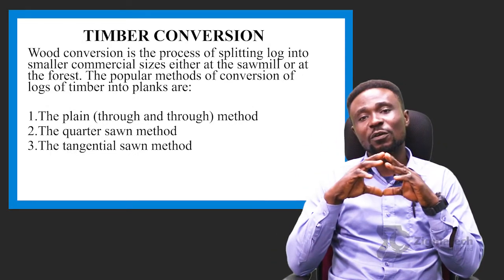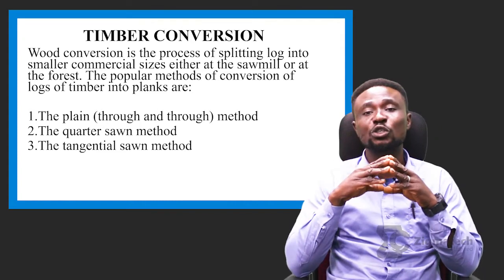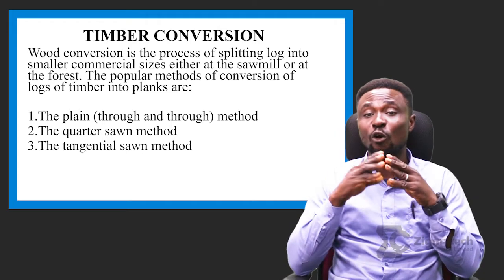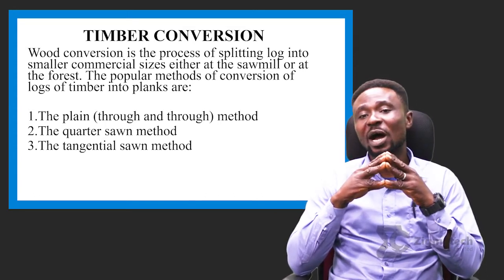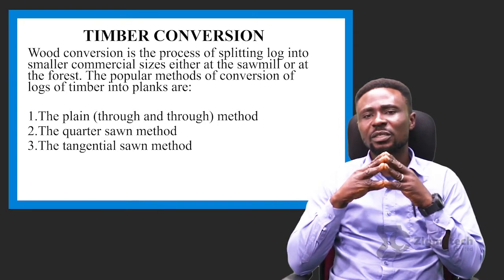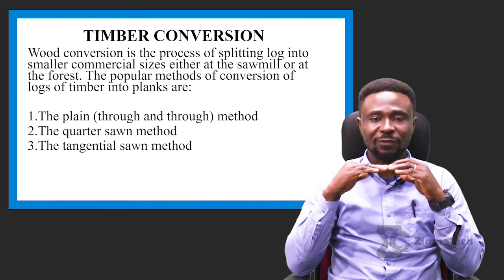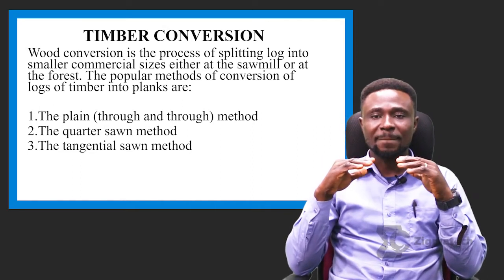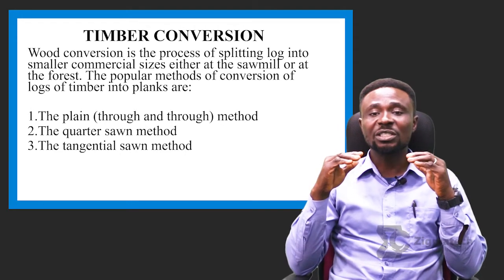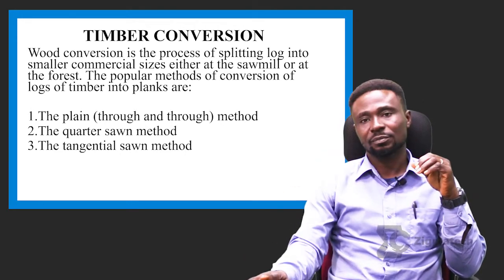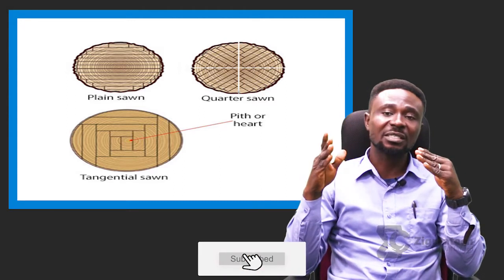After transporting your timber to the sawmill, the next step is to convert it to plank. Wood conversion is the process of splitting logs into smaller commercial sizes, either at the sawmill or at the forest. The popular methods of conversion of logs into planks are: the plain or true-and-true method, the quarter sawing method, and the tangential sawing method. The plain method is sawing the timber in a straight flat line, the quarter method is sawed through the axis of the timber, and the tangential method is sawed at a certain angle determined by the sawmill.